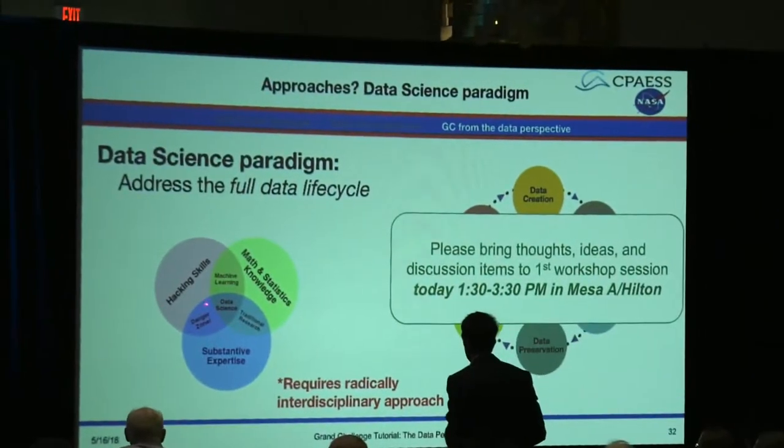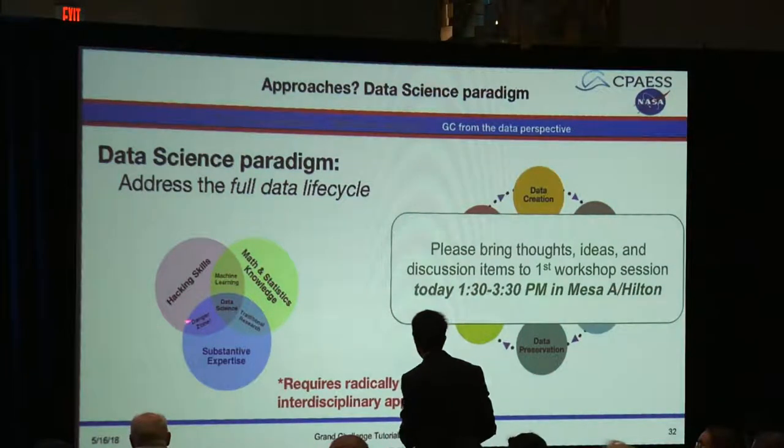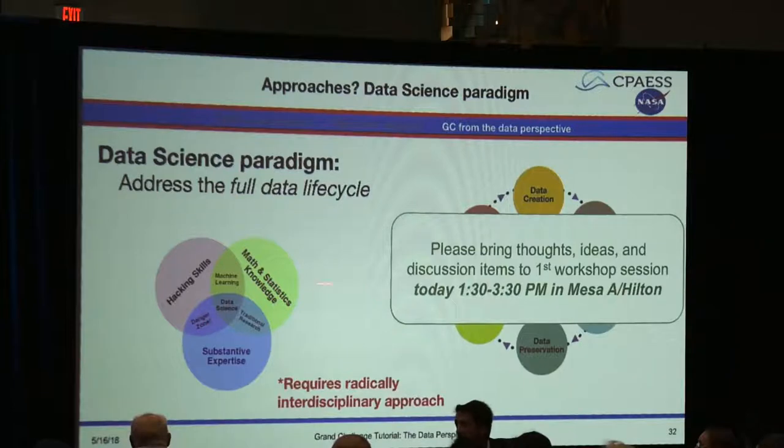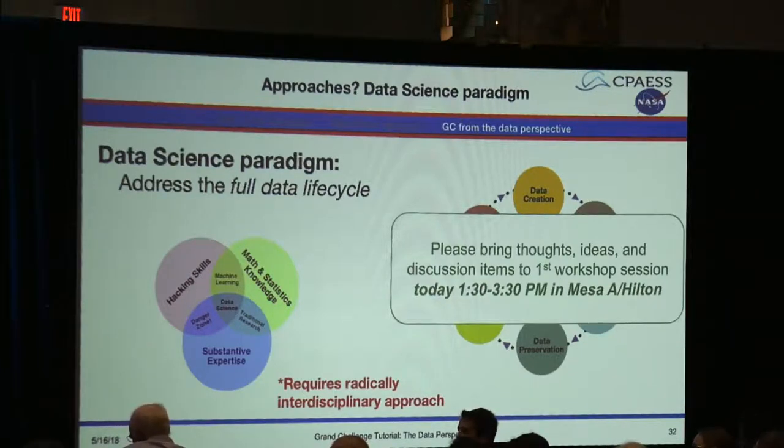During Q&A, a question arose about the 'danger zone' in the data science Venn diagram—the intersection of hacking skills and domain expertise. The speaker explained that this represents cases where you're not understanding the statistics and uncertainties of the data, not incorporating those into analyses—just hacking something together with limited knowledge of the system and then making interpretations from that.